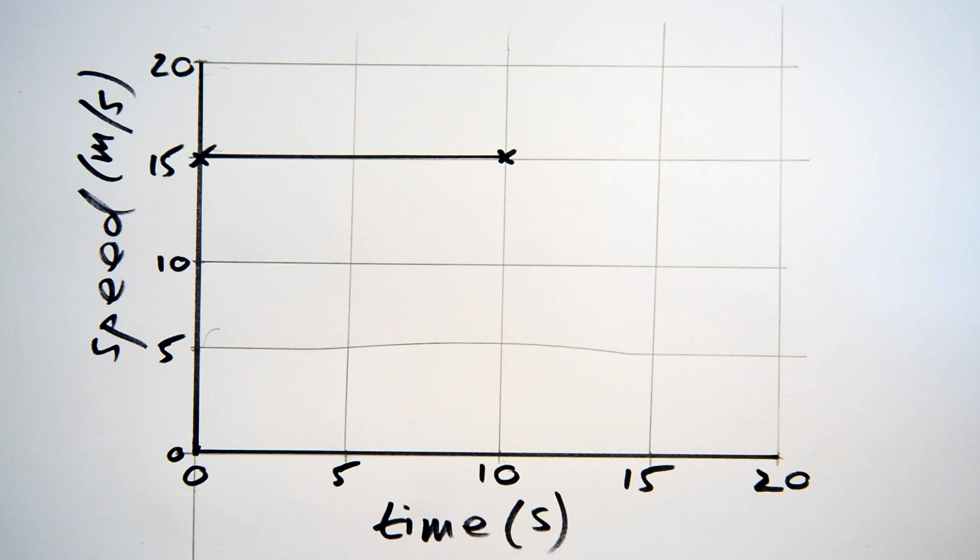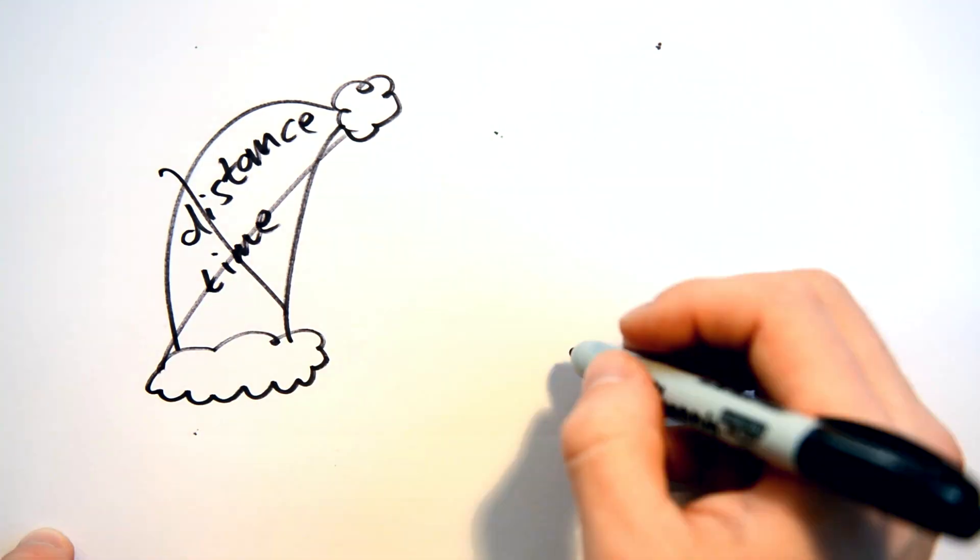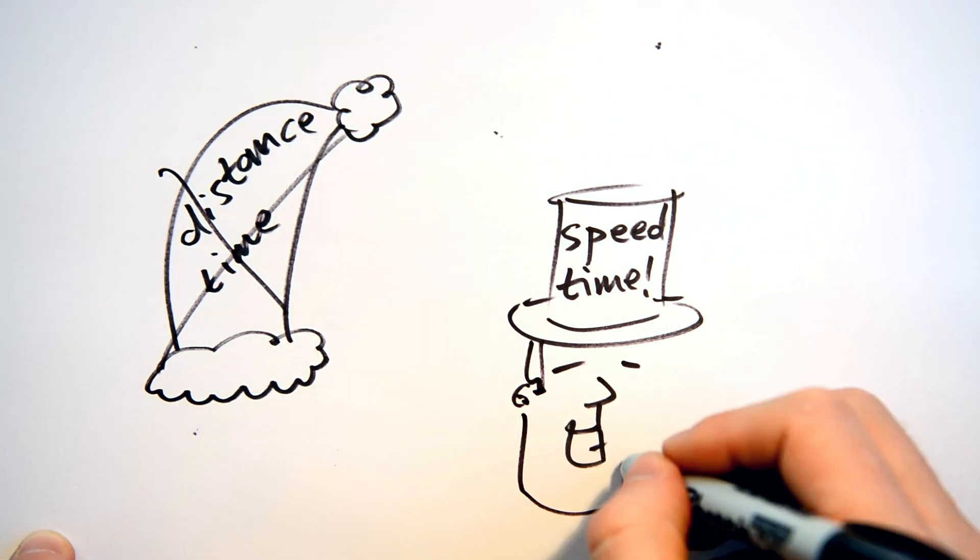This is where people get confused, though. Because it's a flat line, people often go into distance time mode, and so think that the person isn't actually moving, because, as we all know, on a distance time graph, a horizontal line means that it's actually not moving. So be careful about that. Make sure you take off your distance time hat and put on your speed time hat when dealing with these.